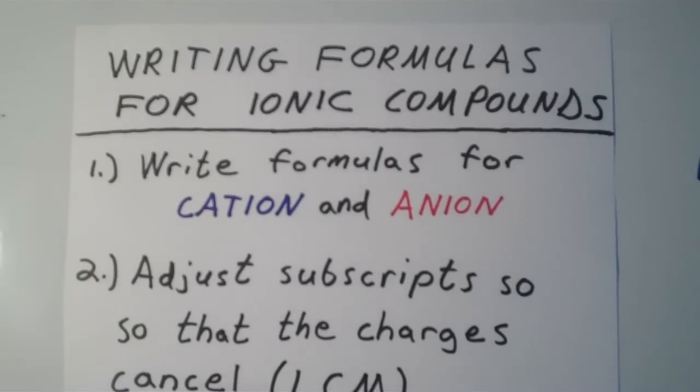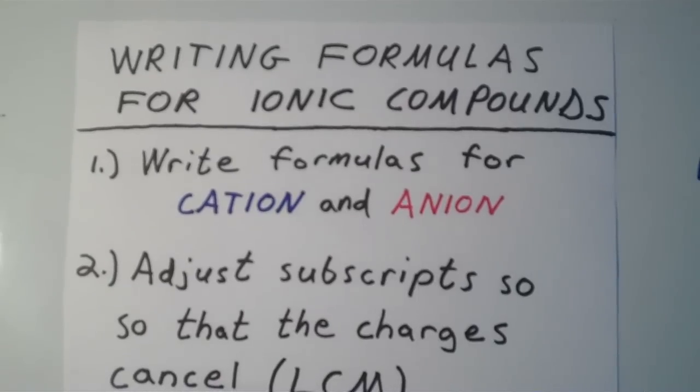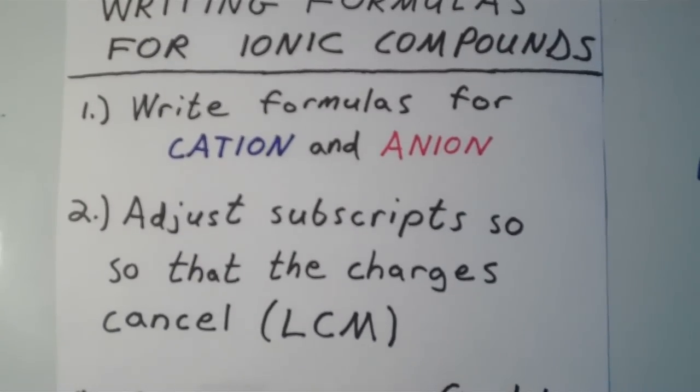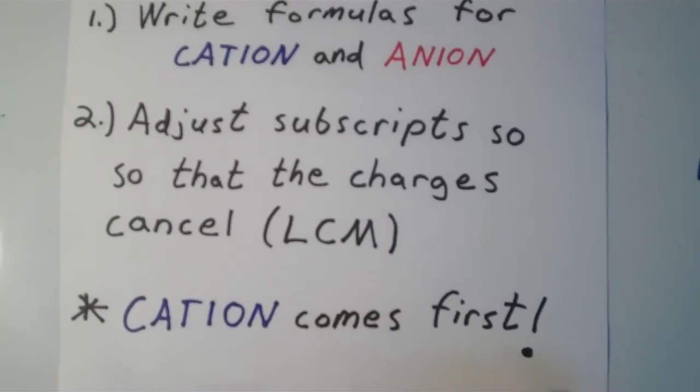Alright, so now I'm going to show you how to write formulas for ionic compounds. To write the formula for any ionic compound, what you want to do first is write the formulas for your cation and your anion separately. The next thing you want to do is adjust the subscripts on your cation and anion so that the charges cancel, meaning that they sum up to zero. And the way that we usually do this is by finding the least common multiple of the charges. One last tip: just like when we name ionic compounds, when we write the formula for an ionic compound, we want to write the cation first. The positively charged cation always comes before the negatively charged anion, both in the name and in the formula.